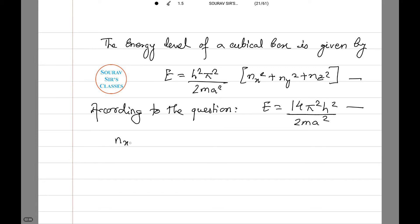Now, according to the question, E equals 14π²ℏ²/2ma². On comparing these two equations, we find that nx² + ny² + nz² equals 14. Therefore, nx equals 1, ny equals 2, nz equals 3 are the only options that satisfy nx² + ny² + nz² equals 14.